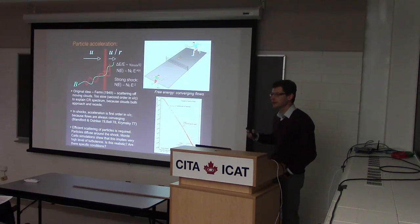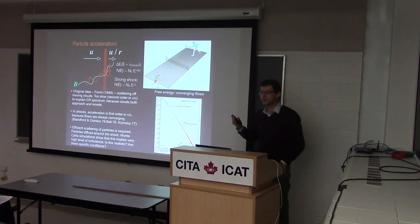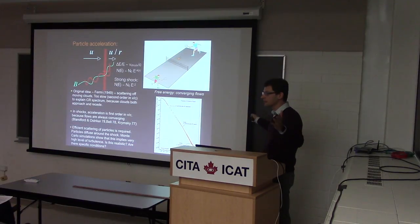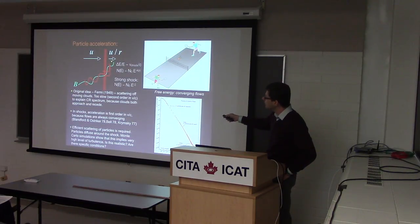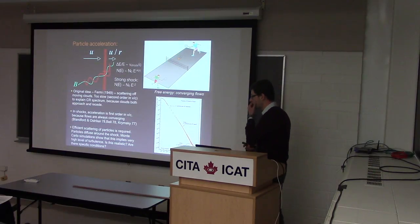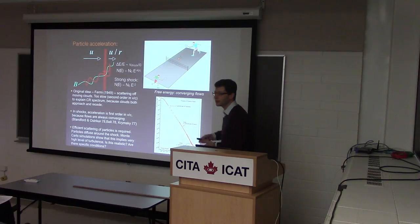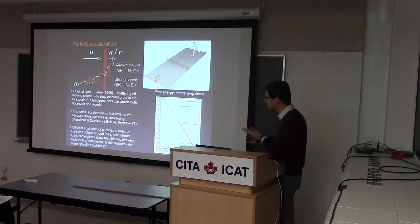In the late 1970s it was realized that at shocks you can have a persistent convergent flow. The problem with clouds is that sometimes they go away. At a shock, if you're sitting in the downstream looking towards upstream, the upstream is coming towards you; from the upstream side, the downstream is going towards you. So there's always a net compression, and if you can bounce between upstream and downstream you gain significant energy. This is now called diffusive shock acceleration.